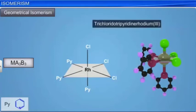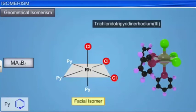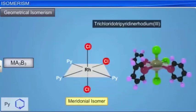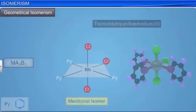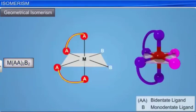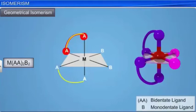Such an isomer is known as a facial isomer. In the other isomer, called a meridional isomer, the positions of the ligands are around the meridian of the octahedron. For MA(A)₂B₂ type complexes, AA is a symmetrical bidentate chelating ligand in which A and A indicate two similar coordinating atoms, while B is a monodentate ligand. The cis and trans isomers of dichlorido-bisethylenediamine-cobalt(3) are shown here.